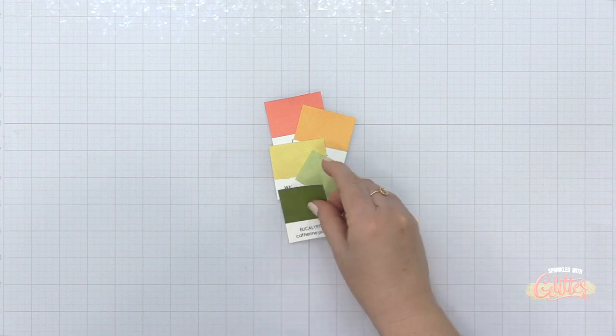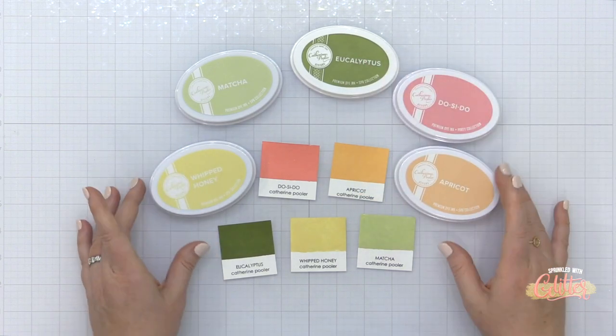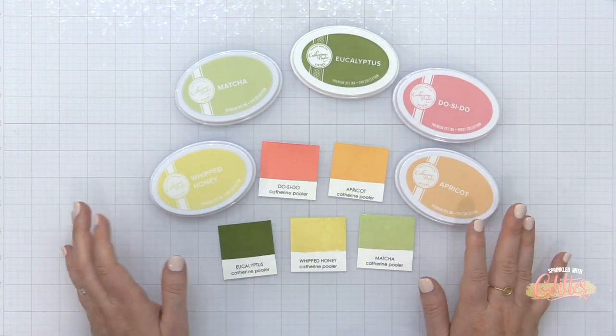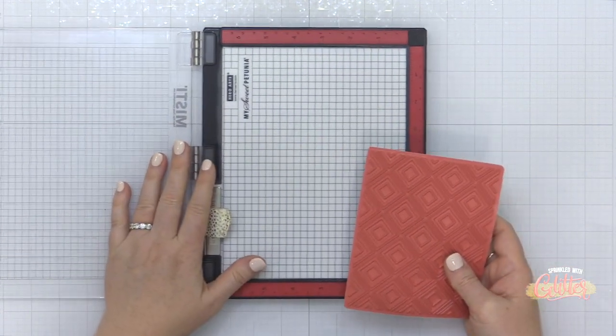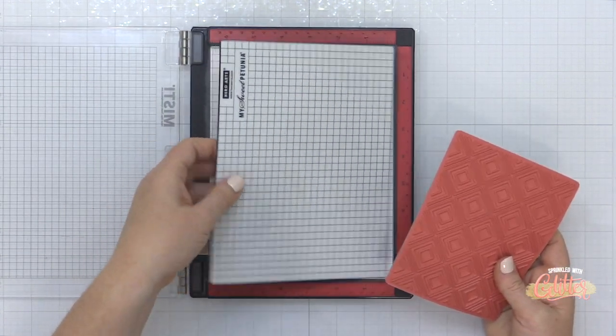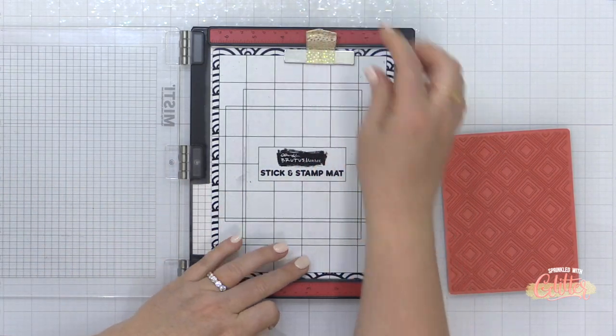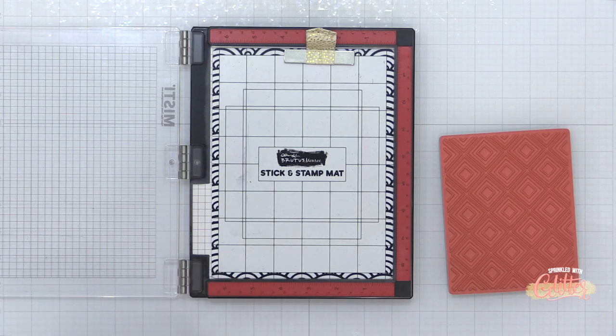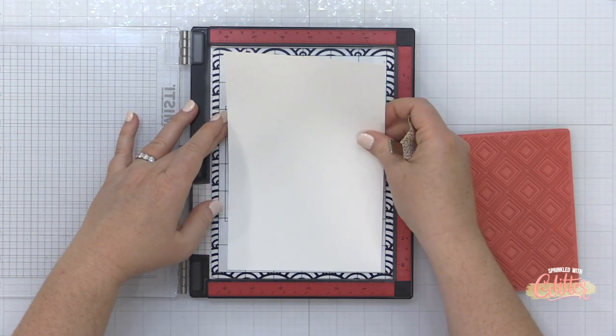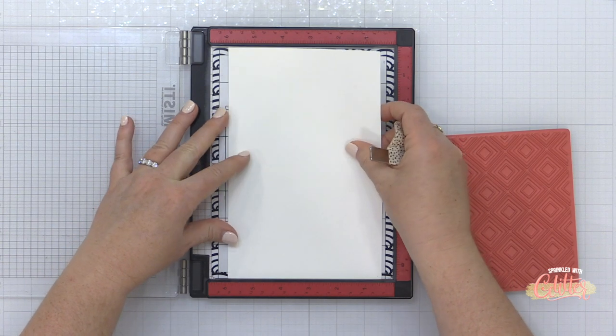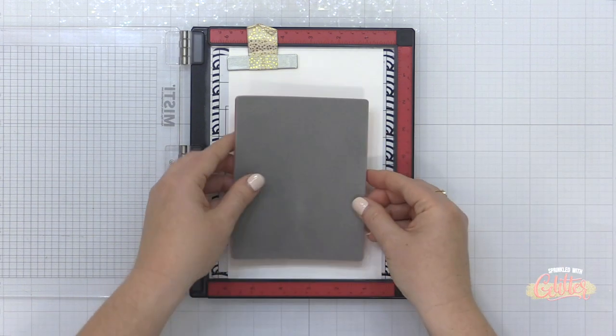Now I thought I would put together a color combo for today. So I have do-si-do, which is one of my favorite Catherine Pooler inks, apricot, eucalyptus, and whipped honey as my color combo today. And I am going to use this brand new Simply Diamonds background stamp. It is a rubber cling mount stamp. So I took out the foam pad in my MISTI and I put my Brutus Monroe stick and stamp mat into my MISTI just to hold my paper in place so that I could stamp this right in the center.